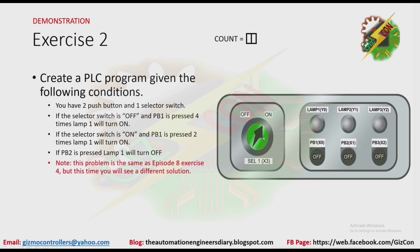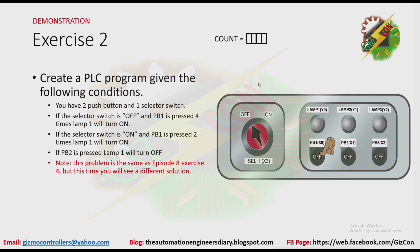Let's have our demonstration. The selector switch is on, so we need to press PB1 two times to make Lamp 1 turn on: one, two. Now let's press PB2 and the lamp turns off. Now let's turn off the selector switch and press PB1 four times: one, two, three, four. Then let's press PB2 — and that's it.